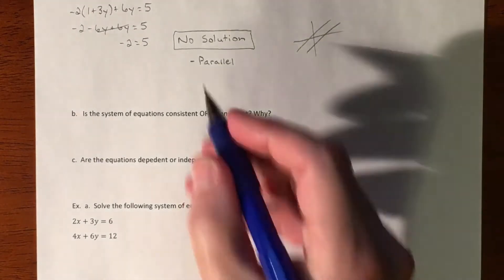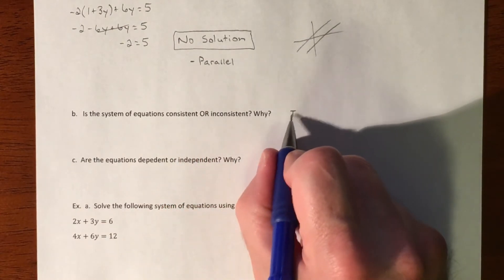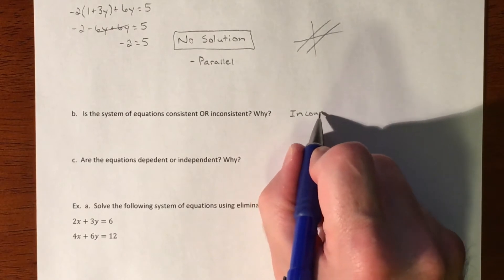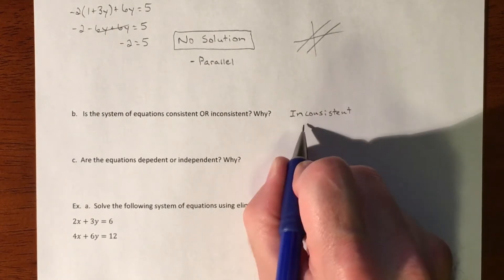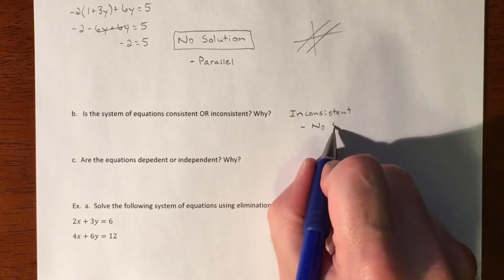What does that mean as far as classifying it? No solution means inconsistent, because a solution is consistent. So inconsistent, and why? Because we have no solution.